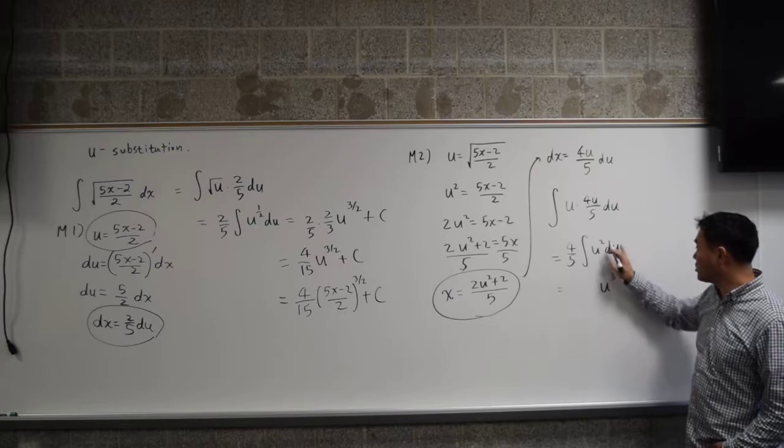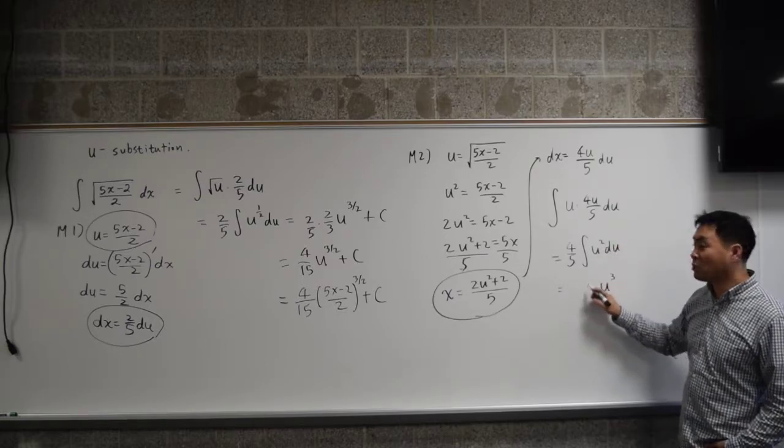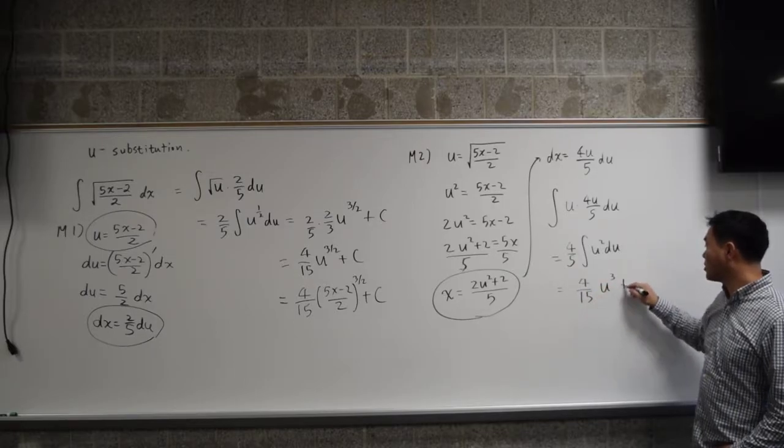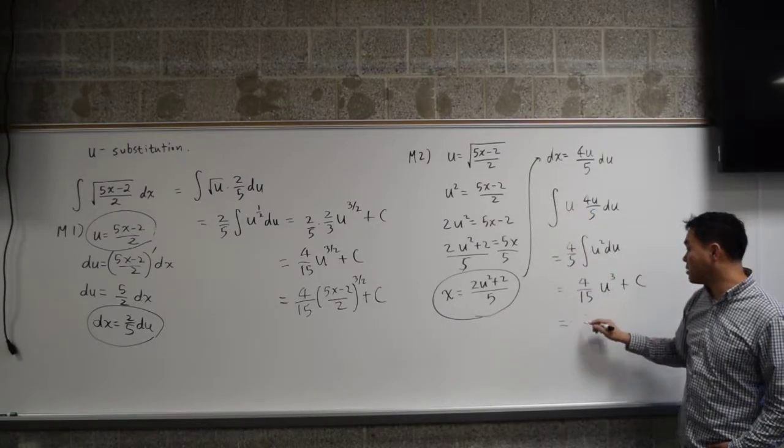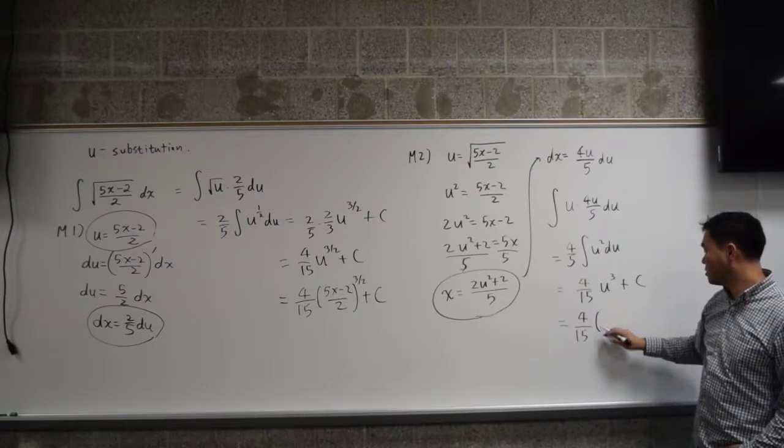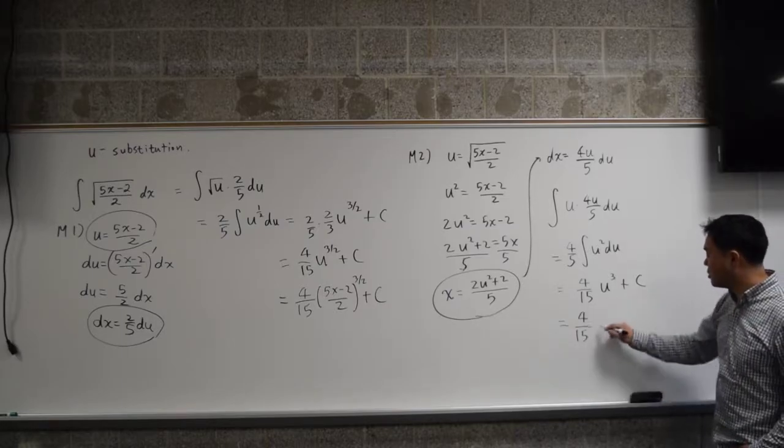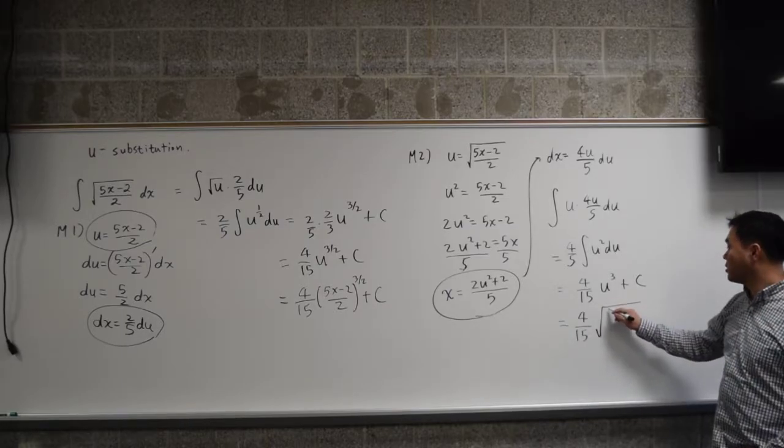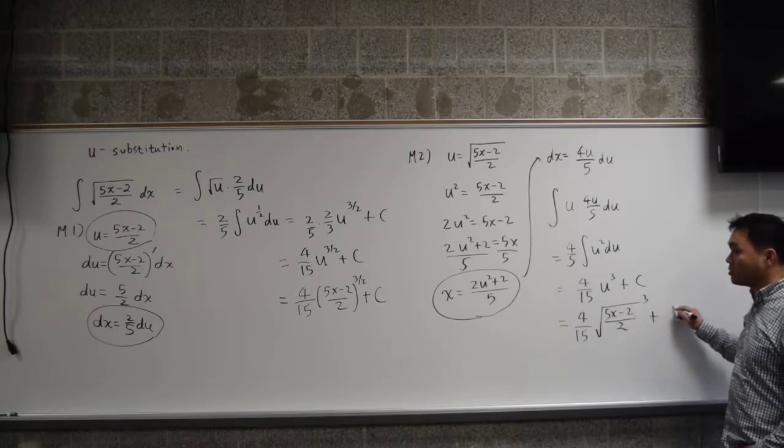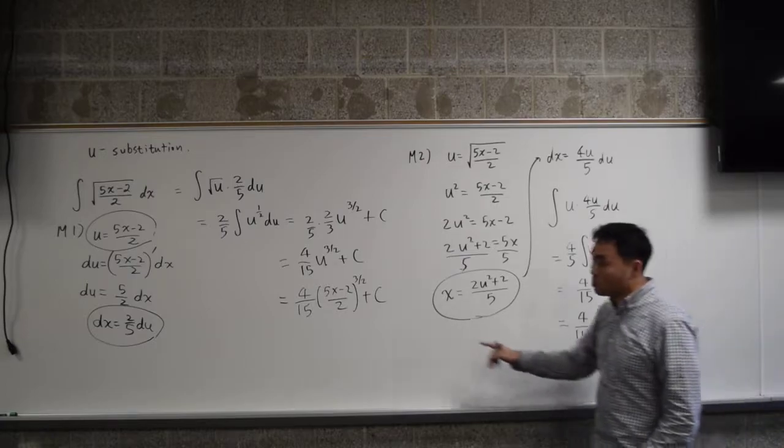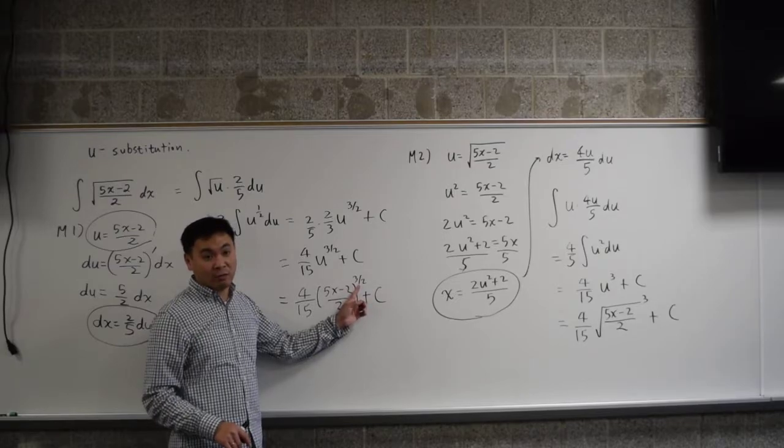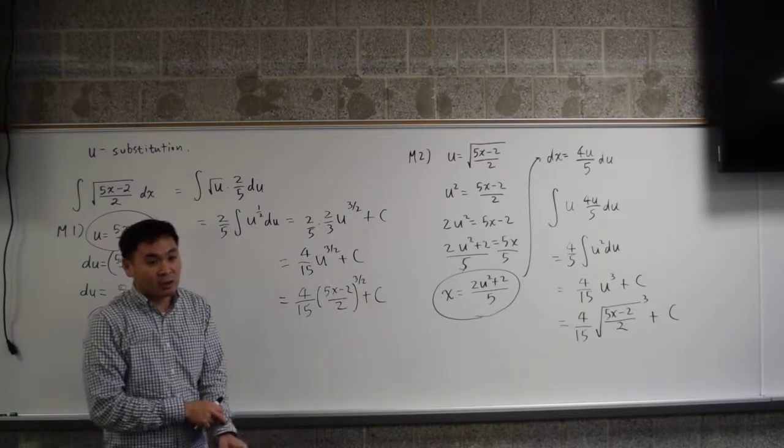Add 1 to the exponent, you put the reciprocal in front. So you have to multiply 1 third to this, which is 4 over 15 plus c. And then you have to go back and plug that in. So that gives you 4 over 15 times square root of 5x minus 2 over 2 cubed plus c. And the same thing as this one, only difference is here the square root is written as half power. So these are exactly the same answers.